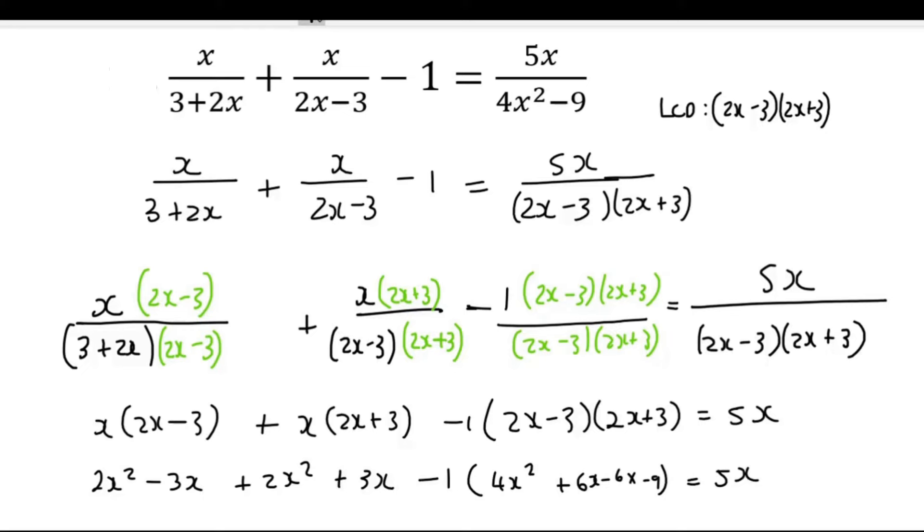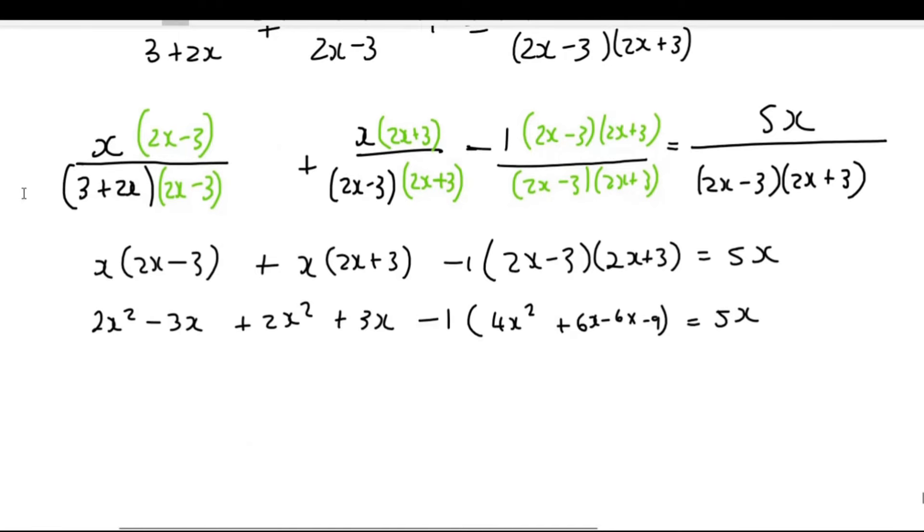And then in the next step, we can put the minus 1 in. Don't try to do it all in one step. So that's going to give us 2x squared minus 3x plus 2x squared plus 3x minus 4x squared minus 6x plus 6x plus 9 equals to 5x.